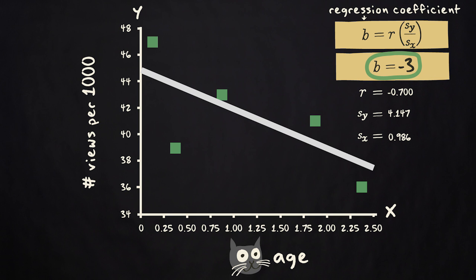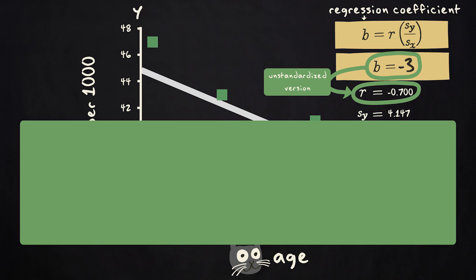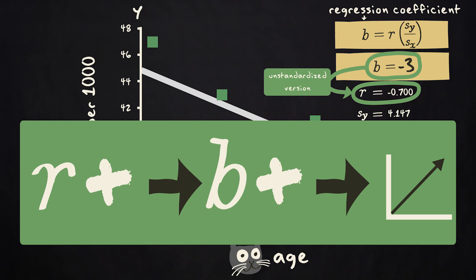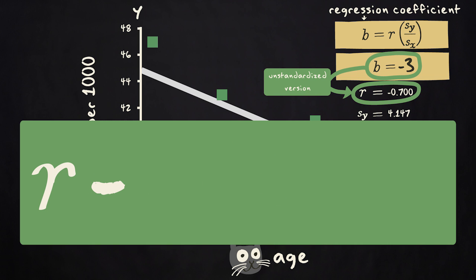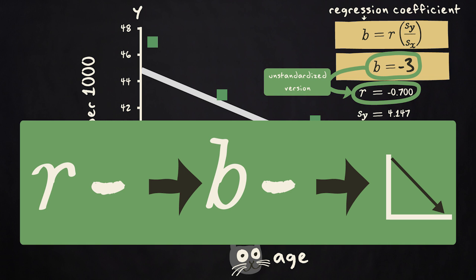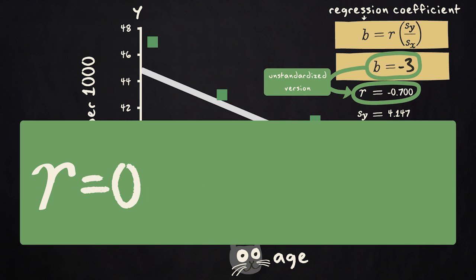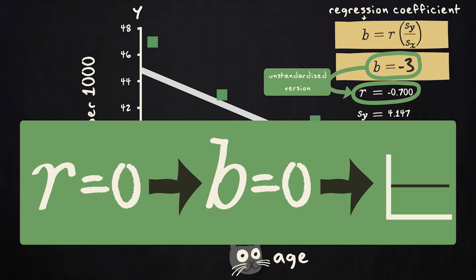Looking at this formula, you can see that the regression coefficient of x, used to predict y, is an unstandardized version of the correlation between x and y. If the correlation is positive, the regression coefficient is positive, and the regression line will go up. If the correlation is negative, so is the regression coefficient, and the regression line will go down. If the correlation is 0, then so is the regression coefficient. The regression line will be horizontal.